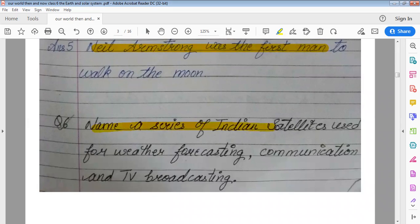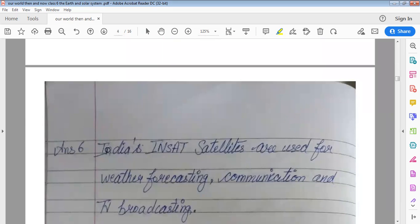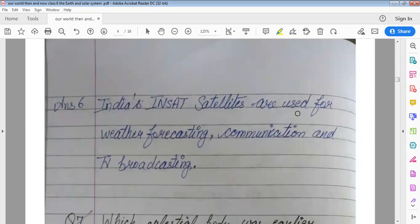Name a series of Indian satellite used for weather forecast, communication and TV broadcasting. Indian INSAT satellites are used for weather forecasting, communication and TV broadcasting.